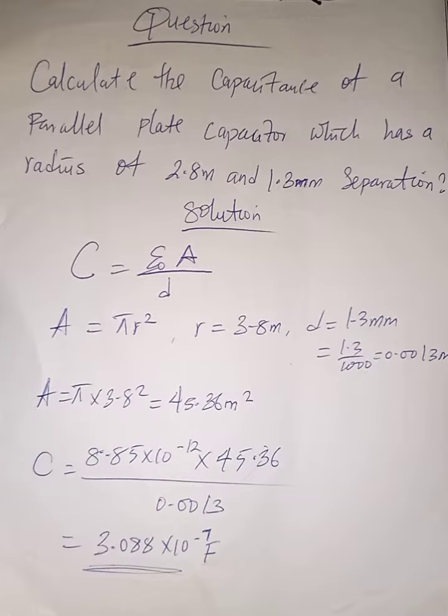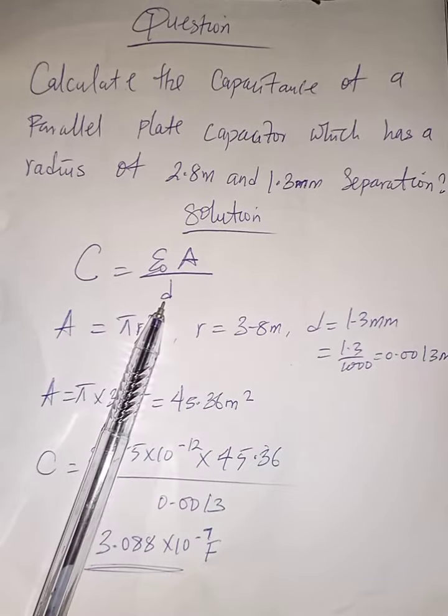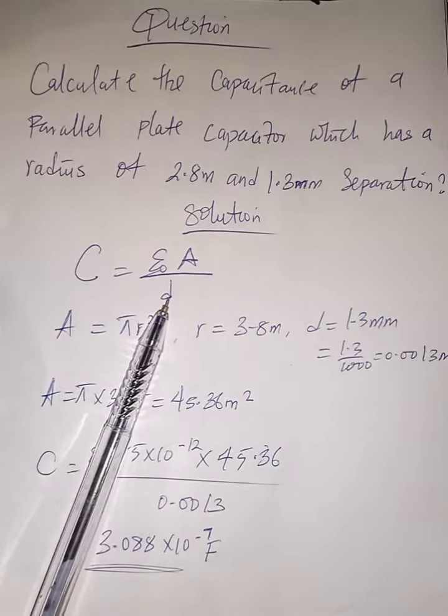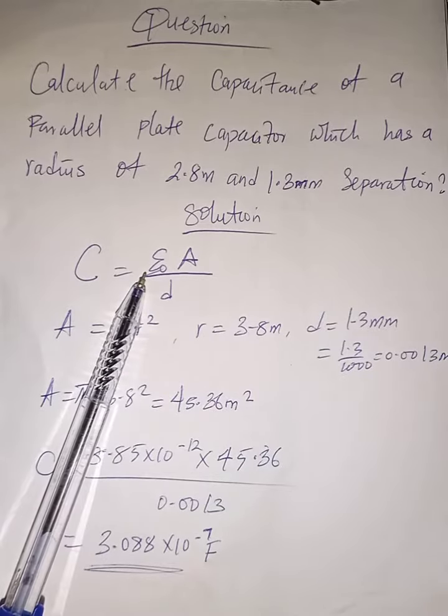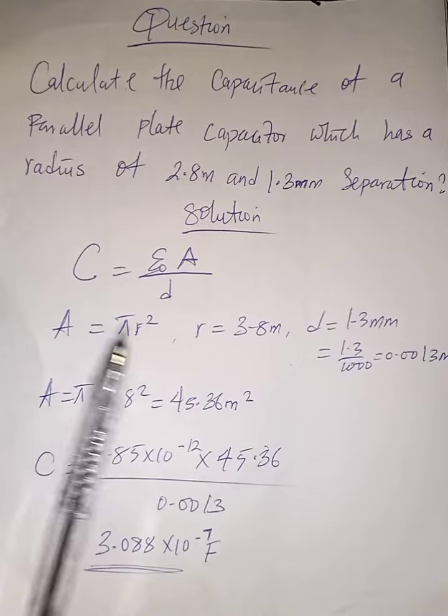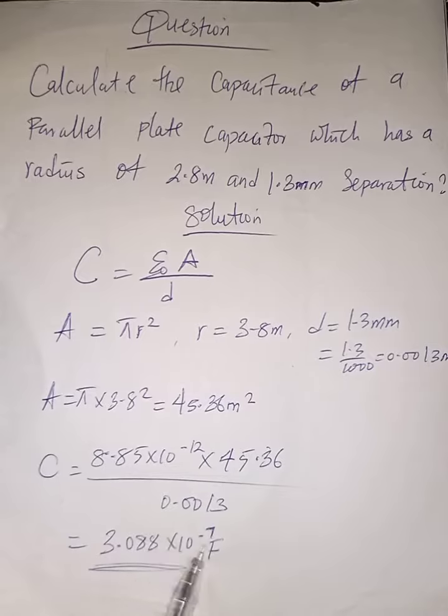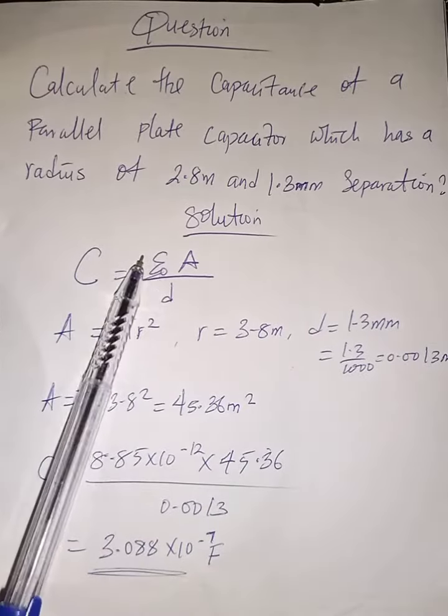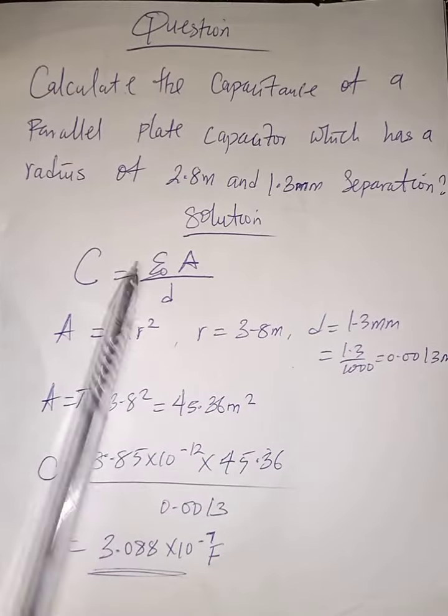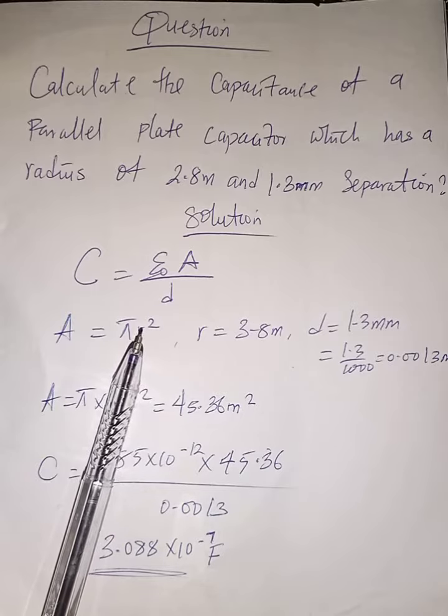Now for a parallel plate capacitor, the capacitance is always ε₀A/d (epsilon naught A over d). If there is a dielectric constant which has a value greater than one, like let's say five, you multiply the answer by K, where K will be the dielectric constant of the material or medium.